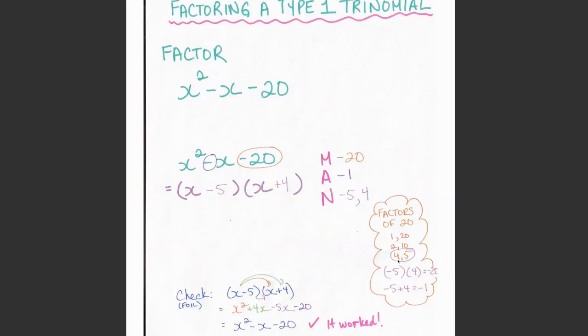When I look at these numbers, the 4 and the 5 stand out to me because I know that if I take -5 and I add 4 to -5, that is going to equal -1. Let's test it out.